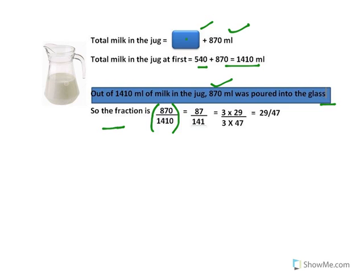So the fraction of milk which was poured was 870 divided by 1410, which is equal to 87 divided by 141, if you take off the zeros from the numerator and the denominator. Now, both the numerator and denominator have 3 as the common factor. So you take off 3, you get 29 by 47. And this is the fraction of milk which was poured from the jug into the glass.